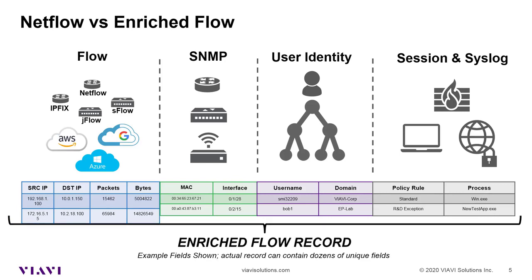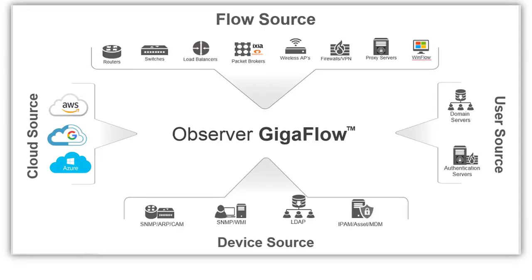There are a lot of different fields to this. It has a lot of power because your flow sources are now not just your routers and switches, but also load balancers, packet brokers, wireless APs, firewalls, domain servers, LDAP servers, and cloud sources out of AWS, Google, and Microsoft. So now things become much more interesting, much more enriched, so to speak.